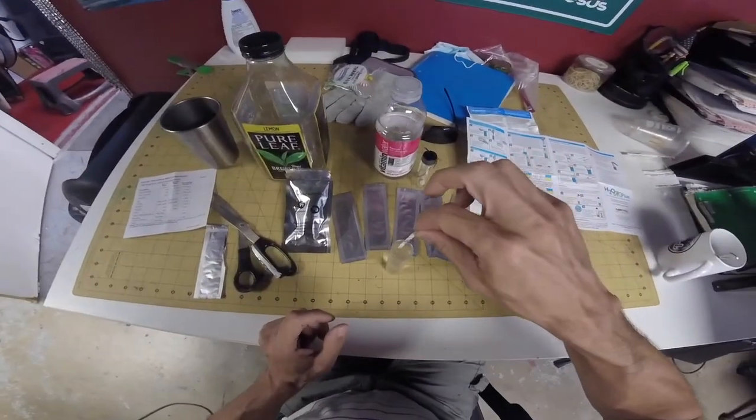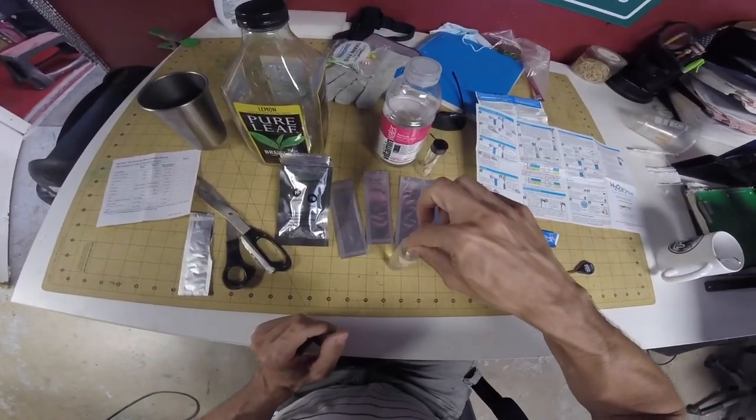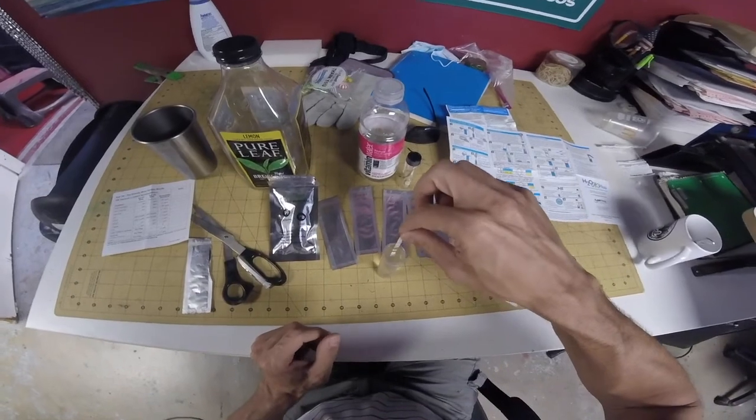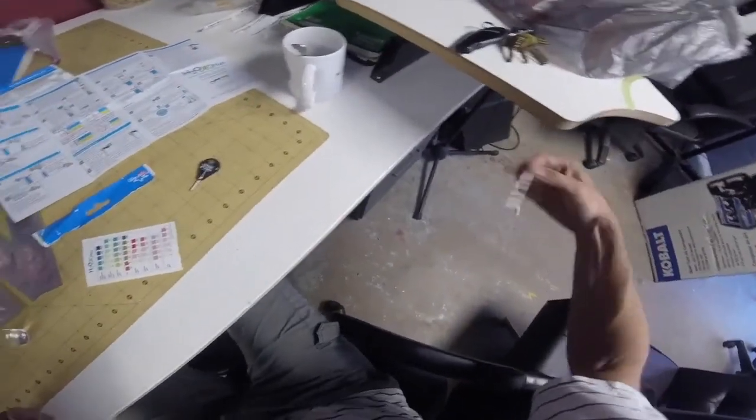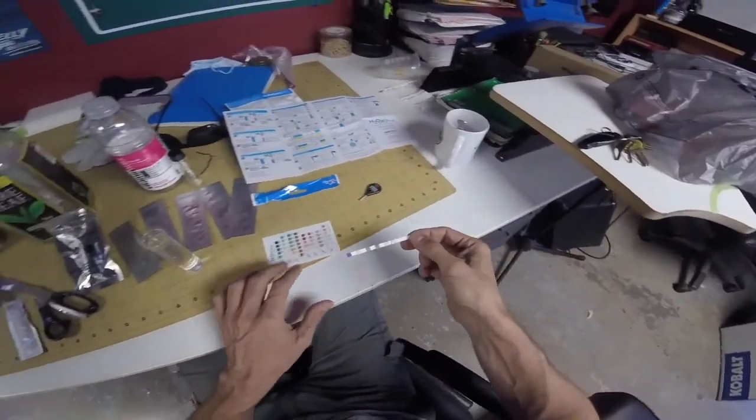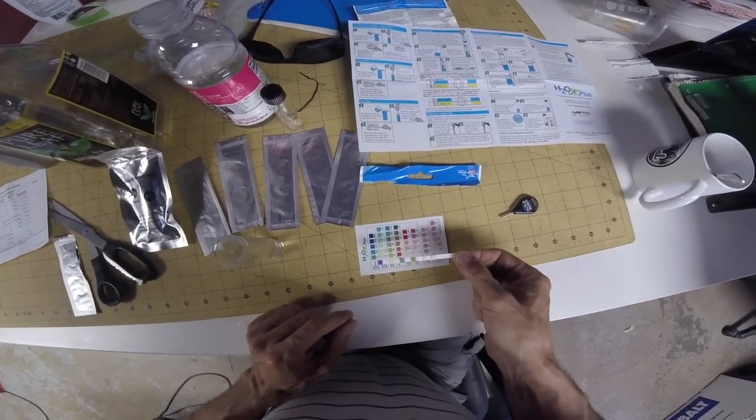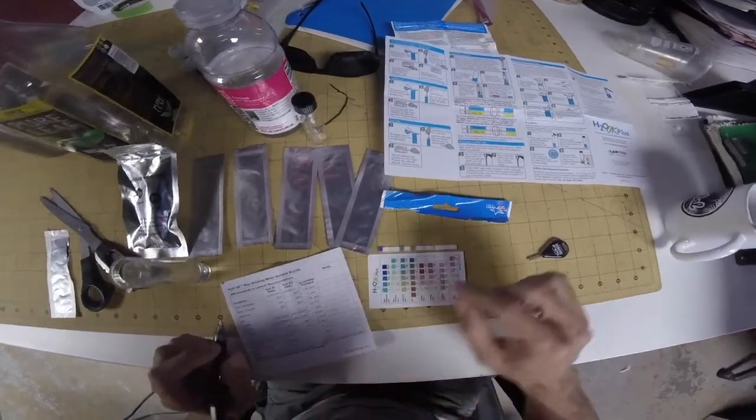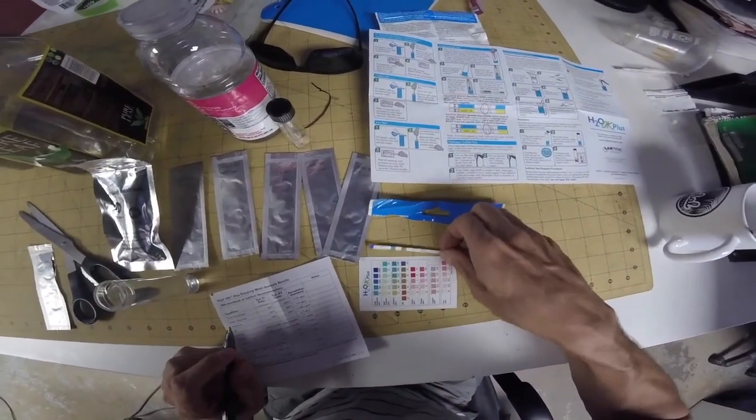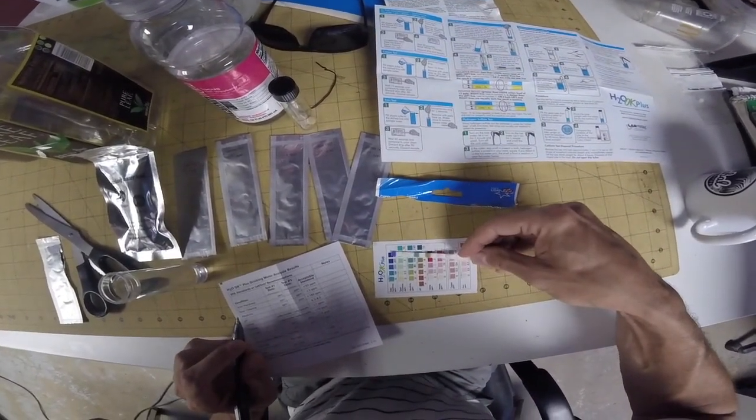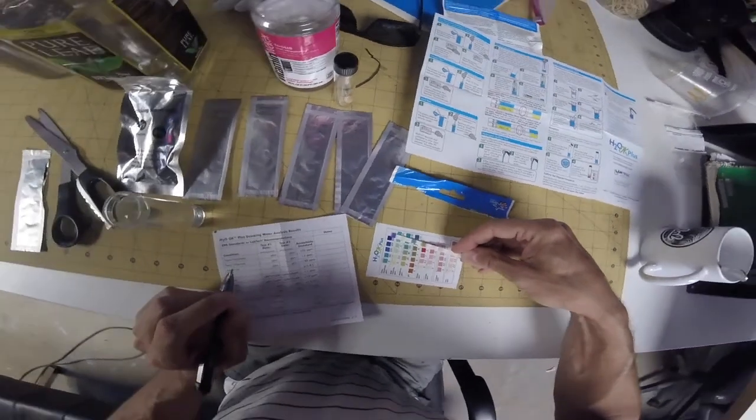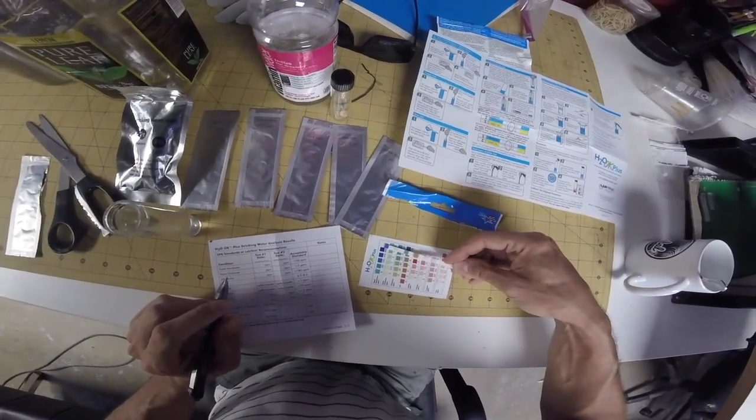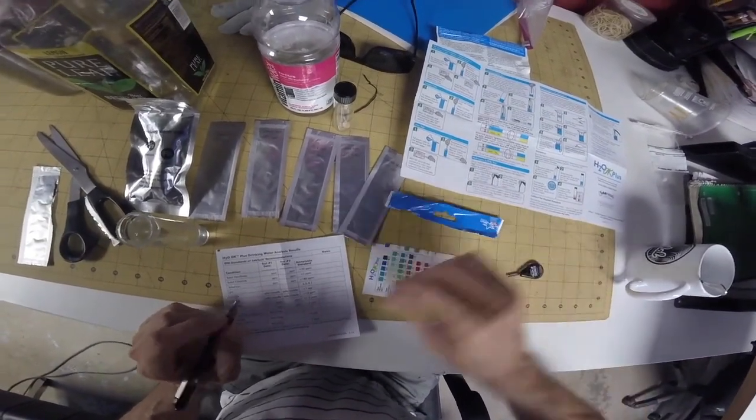Alright, here we go. One, two, shake. One, two, shake. This one is right around here. So total water hardness is 800.